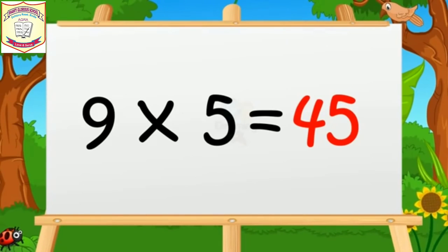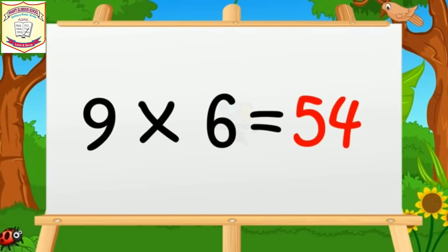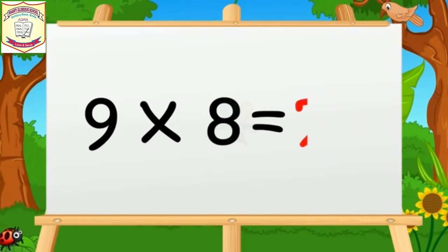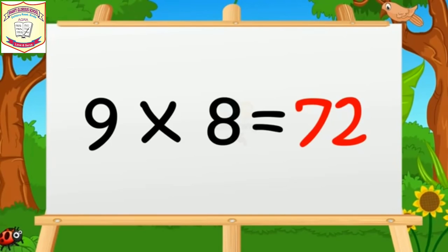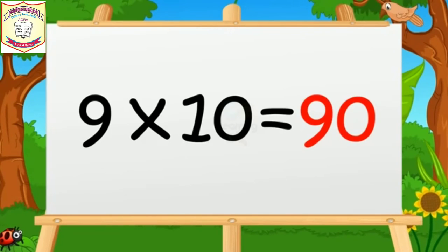Nine sixes are fifty-four. Nine sevens are sixty-three. Nine eights are seventy-two. Nine nines are eighty-one. Nine tens are ninety.